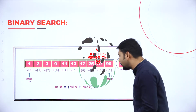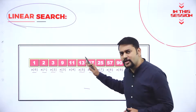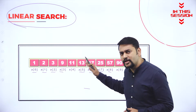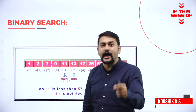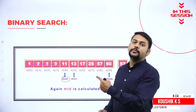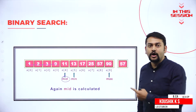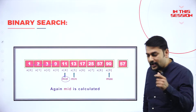Mid is equal to minimum plus maximum divided by two. The drawback of linear search is that I need to compare one by one with all the values. Also remember: I need to have all the values in sorted order — only then will I be able to perform binary search.